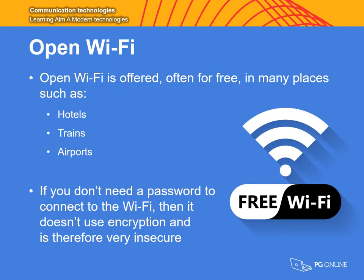We're now going to look at another key term: open Wi-Fi. Open Wi-Fi is offered for free in many places — in restaurants such as McDonald's, at train stations, or in hotels. You simply connect by submitting an email address or your name, without providing information that signs you into an authorised account. If you don't need a password to connect to the Wi-Fi, it doesn't use encryption and is therefore very insecure. Without encryption, if people gain access to your files or passwords, they can use them without having to decipher them.